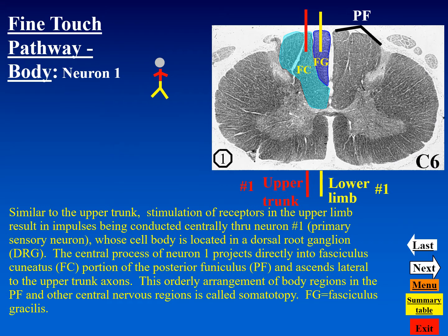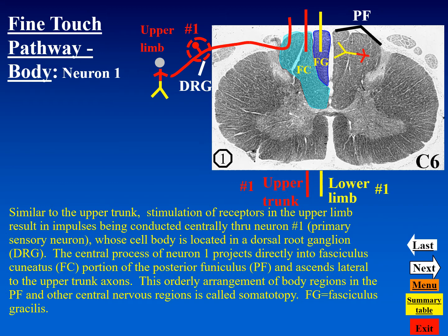At the cervical enlargement region of the spinal cord, we see fine touch information arriving from the upper limb. The cell body of neuron one in the dorsal root ganglion enters the spinal cord by way of the dorsal root, and like fibers from the upper trunk, becomes part of the fasciculus cuneatus and ascends. The somatotopic organization continues so that the upper limb is now represented most laterally in the posterior funiculus.